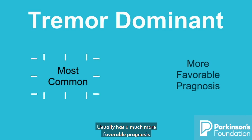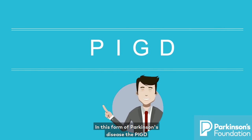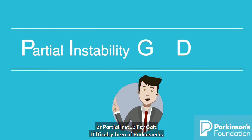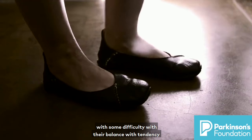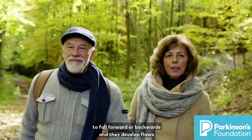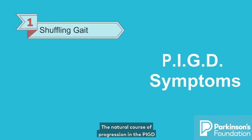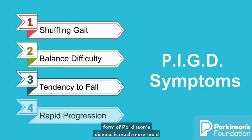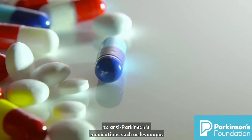Usually the tremor dominant form has a much more favorable prognosis than the second subtype, the PIGD form of Parkinson's disease. In the PIGD — postural instability gait difficulty — form, patients often start with a shuffling gait, some difficulty with their balance, a tendency to fall either forward or backwards, and they develop falls early in the course of the disease. The natural course of progression is much more rapid than in the tremor dominant form.